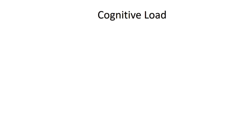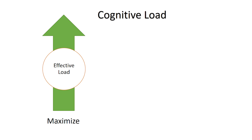Here's a way to think about this to help inform your teaching. We can sort cognitive load into three buckets. The first is when working memory is able to focus on the learning task at hand. In our example, it was processing the history reading to generate meaningful memories. We call that effective load, and it's something we want to maximize.